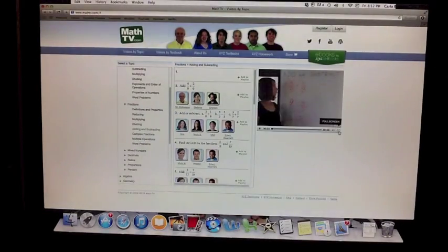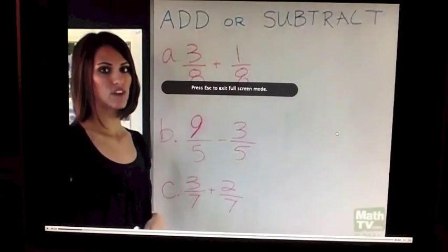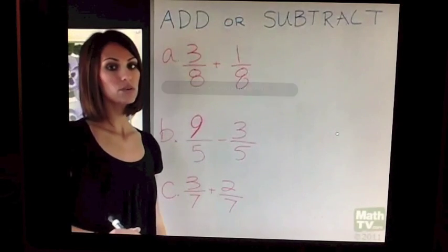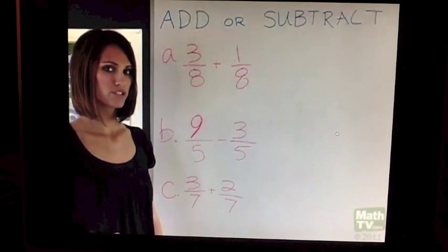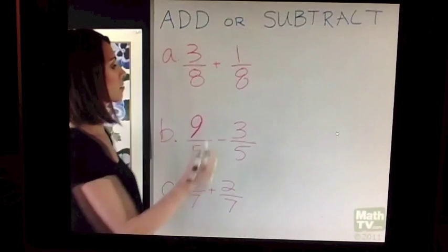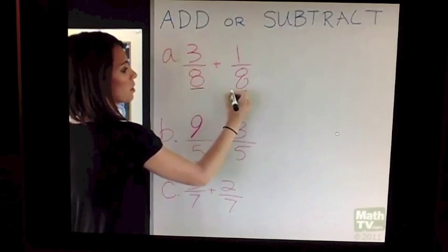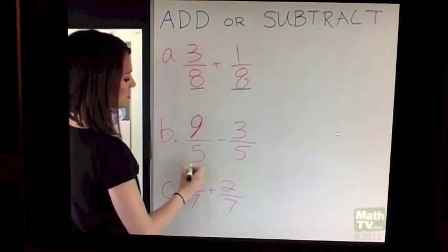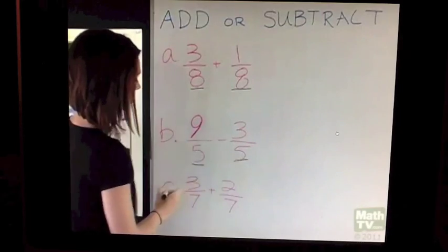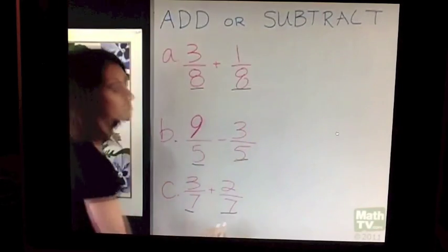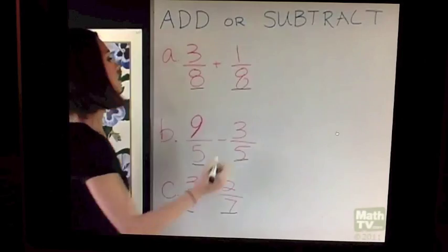In this example, we want to add or subtract each of these fractions. When you add or subtract fractions, you always have to make sure that the denominators are the same. In this case, they're both 8. In example B, they're both 5. In example C, they're both 7. We don't have to reduce anything.